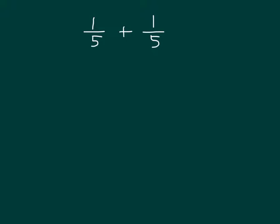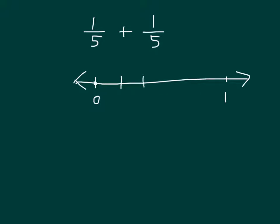Here we have 1 fifth plus 1 fifth. Let's make a number line with endpoints of 0 and 1. Between 0 and 1, we'll estimate 5 equal parts, making 4 lines in between to create 5 equal parts.